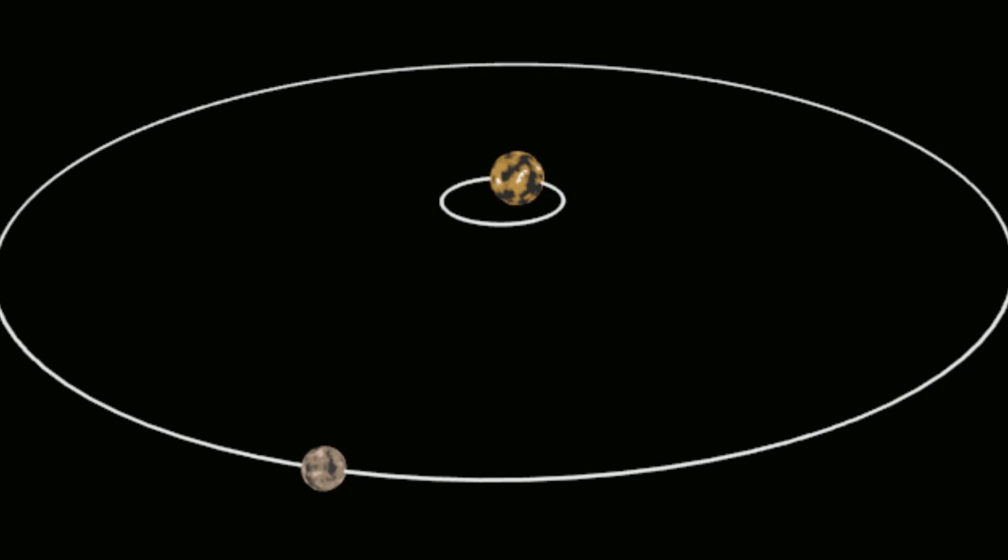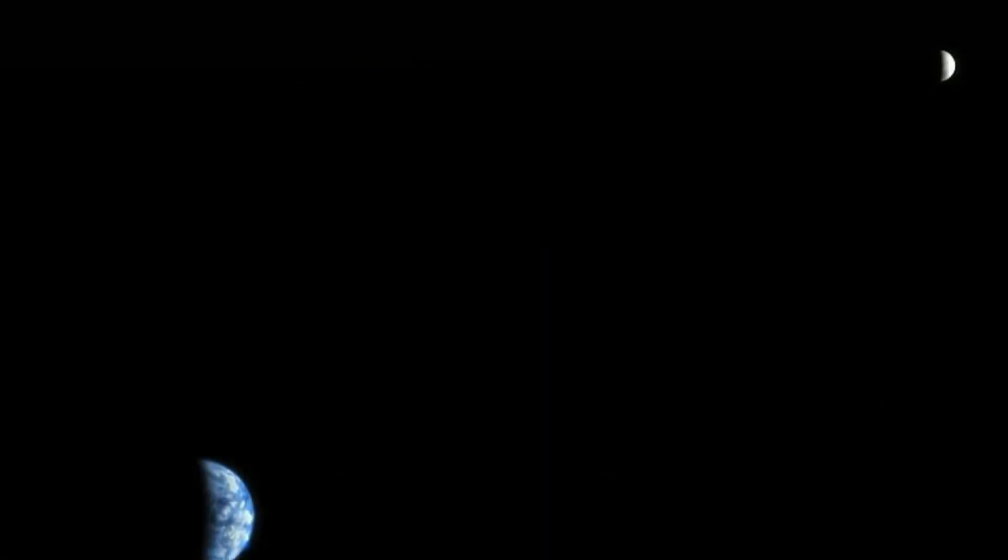At the same time, the Moon gains some of the Earth's rotational energy and moves away from the Earth slightly, increasing its orbital period. This process is called the tidal acceleration, and it is the main reason why the Earth's rotation is slowing down.